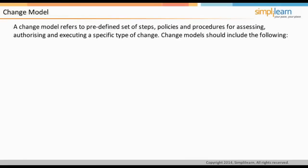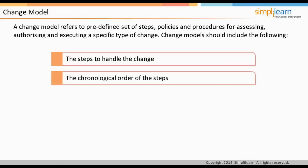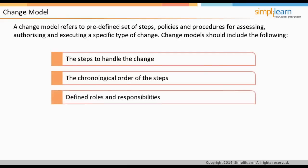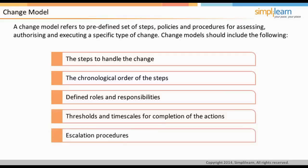A change model refers to a predefined set of steps, policies, and procedures for assessing, authorizing, and executing a specific type of change. Change models help to save costs, minimize risk, and improve the consistency of execution around changes. The change model should include: steps to handle changes including unexpected events and issues; the chronological order of those steps with dependencies defined; responsibilities — including identification of change authorities who will authorize the change and decide whether formal change evaluation is needed; thresholds and timescales for completion of actions; and escalation procedures including who should be contacted and when.